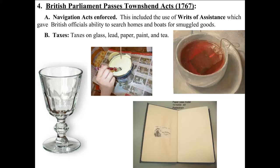If you were a ship captain or owned a ship that traded goods in and out of the colonies, chances are you were smuggling 80% of your goods. Now the British government gave power to the military and customs officers to actually search your ships for smuggled goods — which made a lot of colonists upset and nervous, especially those trading goods. On top of that, more taxes were added: taxes on glass, lead, paper, paint, and tea.